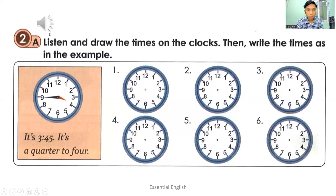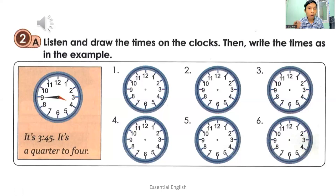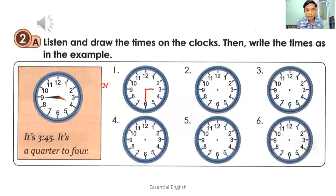Number one: it's three thirty — it's half past three. You have to draw a minute hand and an hour hand. When you write the time, you can write 'it's three thirty' or 'it's half past three'.